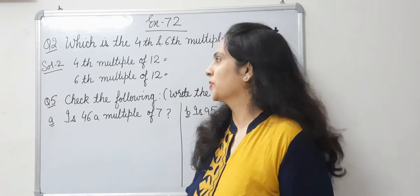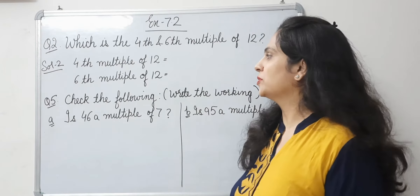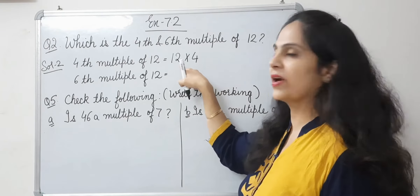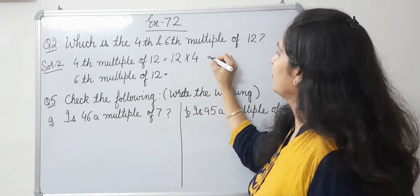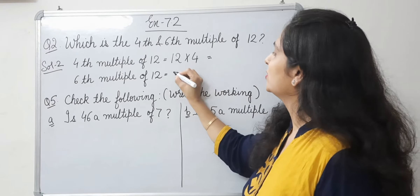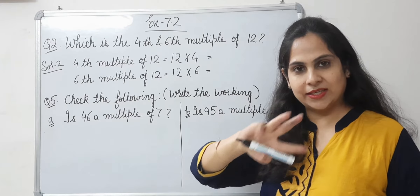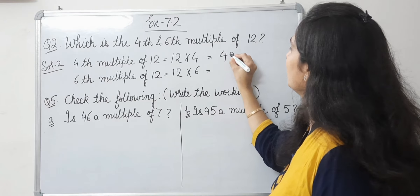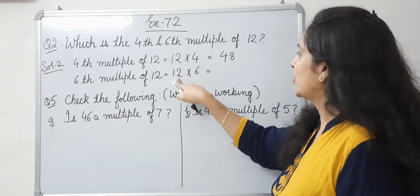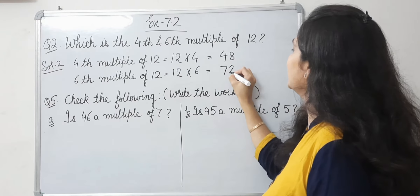Now let's do question number 2: which is the 4th and 6th multiple of 12? To find the 4th multiple of 12, we multiply 12 by 4. 12 1s are 12, 12 2s are 24, 12 3s are 36, 12 4s are 48. So the 4th multiple of 12 is 48. For the 6th multiple: 12 5s are 60, 12 6s are 72. So the 6th multiple of 12 is 72.